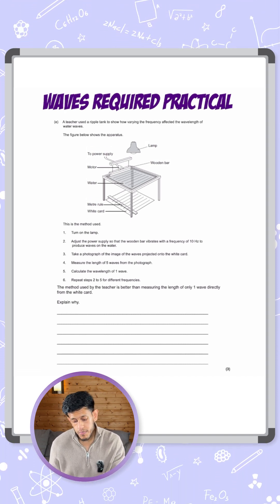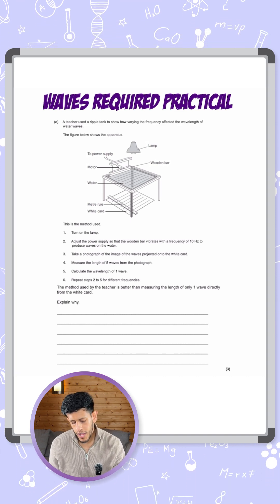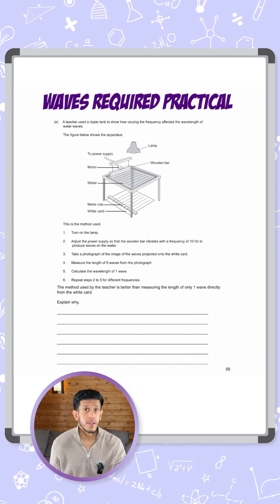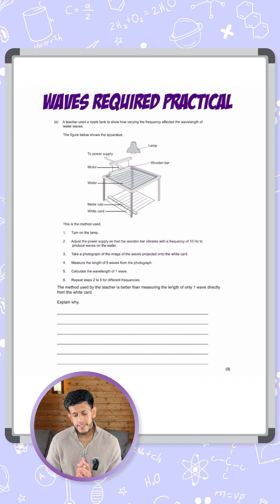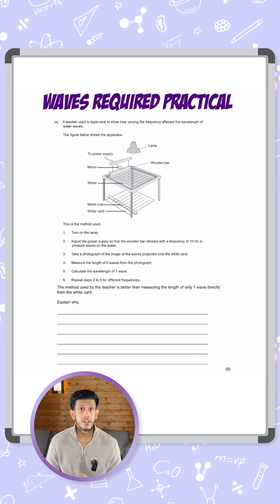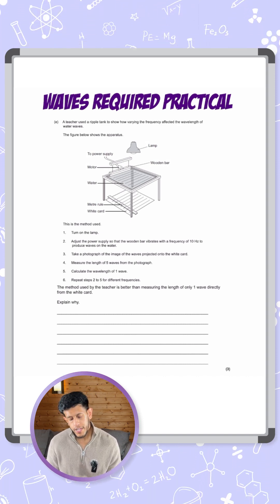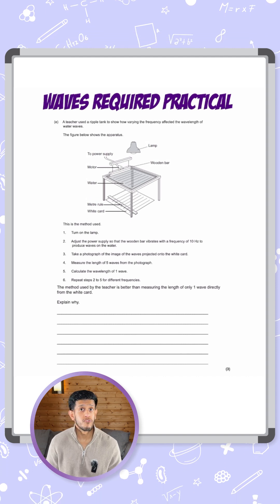The question asks: the method used by the teacher is better than measuring the length of only one wave directly from the white card, explain why. So you can see that instead of just taking it directly from the white card, they've taken a photograph and measured five waves, then calculated one wavelength from that.